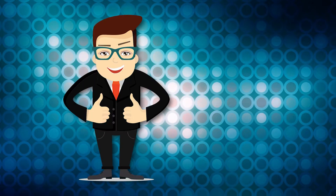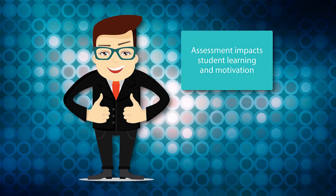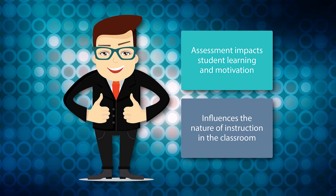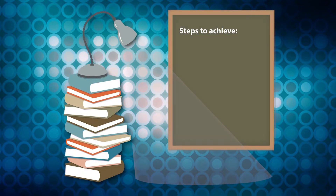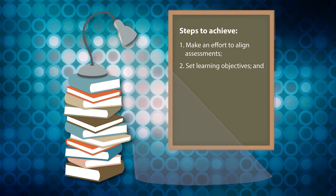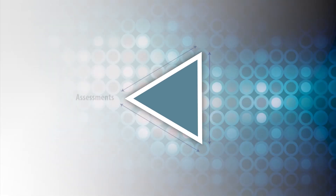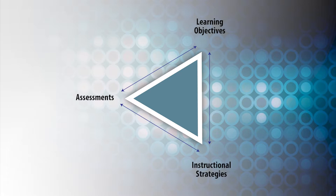From the principles of assessment, we can see that just as assessment impacts student learning and motivation, it also influences the nature of instruction in the classroom. If we want to achieve what we are supposed to achieve, we should make an effort to align assessments, set learning objectives, and design easy and understandable instructional strategies. Assessments should reveal how well students have learned what we want them to learn, while instruction ensures that they learn it. Assessments, learning objectives, and instructional strategies need to be closely aligned so that they reinforce one another.